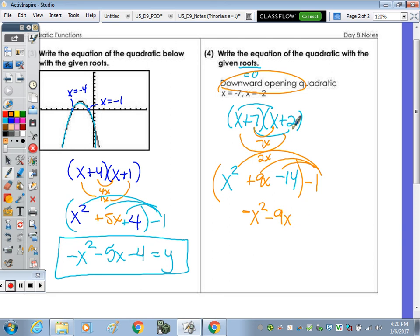So distributing the negative all the way through, we end up with negative x squared minus 9x. Well, I had a mistake here. Positive 7 times positive 2 is a positive 14. Now multiplying by negative 1 would be negative 14. And it's equal to 0 because we were given the roots and not the graph.